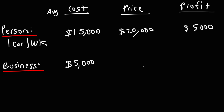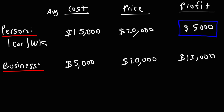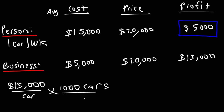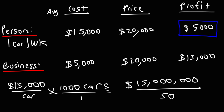Let's say the business's average cost is $5,000 and the market value for selling the car is $20,000 — their profit would be $15,000 per car. Now let's discuss profit per person. The individual person building one car a week has a profit of $5,000 per week. For the business, profiting $15,000 per car at a production level of 1,000 cars, the profit for that week is $15,000,000. If that $15,000,000 is evenly divided among the team of 50, the average profit per person for that week is $300,000.